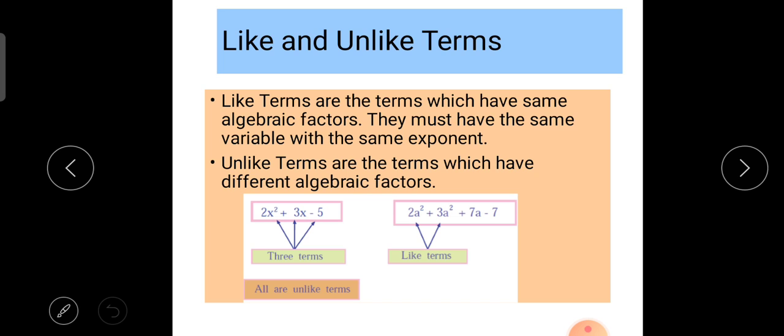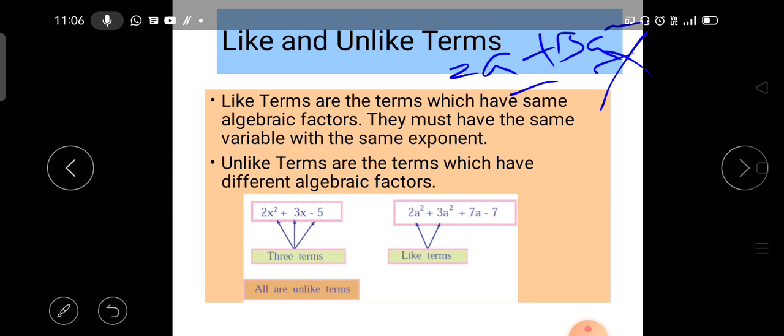Like terms: Like terms are the terms which have the same algebraic factors. They must have the same variable with the same exponent. For example, 2a plus 3a². The algebra is the same but the power is not the same, so they are not like terms. Like terms should have the same exponent value.